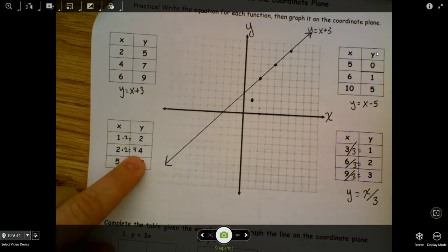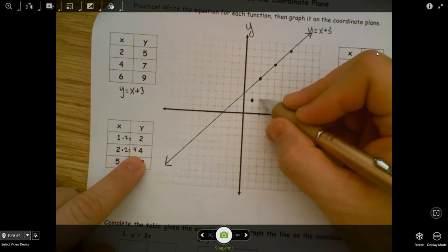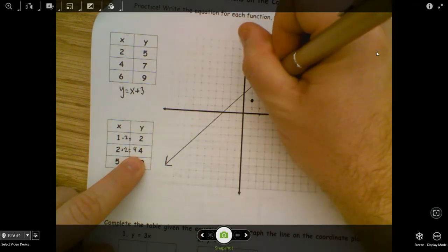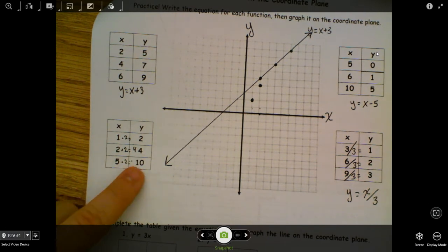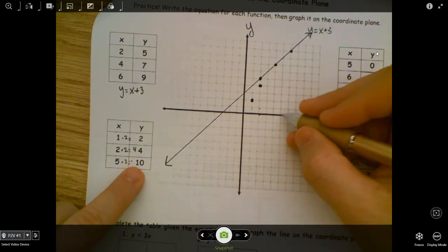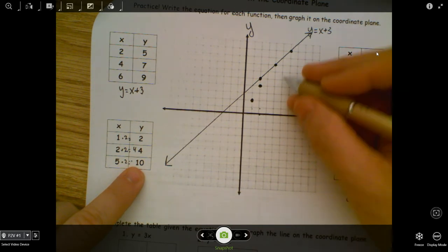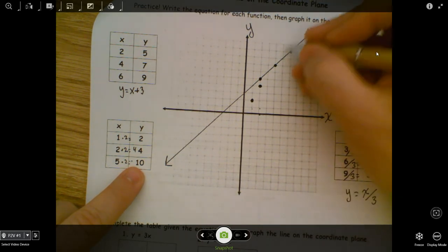Over 2, up 4. One, two, one, two, three, four. Over 5, up 10. One, two, three, four, five. One, two, three, four, five, six, seven, eight, nine, ten. The top one there.